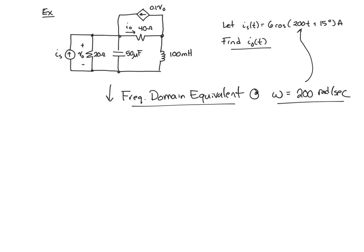So note that the phasor for current source Is is Is bar. All we need is the magnitude, which is 6, and the angle, which is 15 degrees, so that would be the phasor in polar form. And in rectangular form, that can be expressed as approximately 5.8 plus J 1.6 amps.